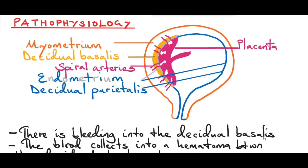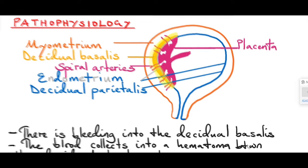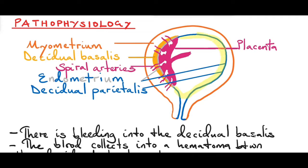Before we discuss the pathophysiology of abrupta placenta, let's remind ourselves of a few basic anatomy. Here we have the uterus. The inner lining of the uterus is called the endometrium. The middle layer is called the myometrium and the outer layer is called the perimetrium. What covers the perimetrium is the serous coat. Here we have the placenta with umbilical cord as well as spiral arteries. The spiral arteries are located in the central part of the placental bed and they come from the uterus, specifically the myometrium. The placenta is implanted into the endometrium, specifically the decidua basalis of the endometrium. The decidua basalis is located deep in the endometrium and can proliferate and also invade part of the myometrium. The remaining portion of the endometrium that the placenta does not implant into is called the decidua parietalis.